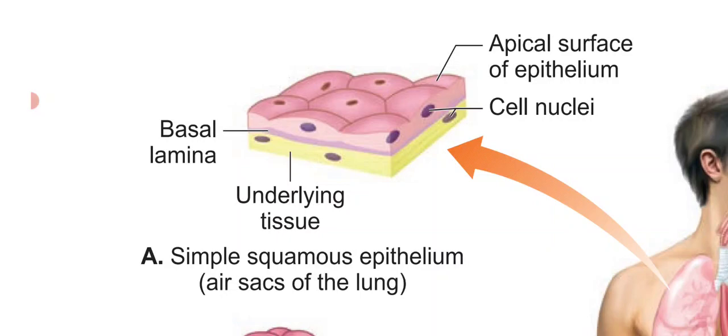Simple squamous epithelium is made up of a single thin layer of flattened cells with irregular boundaries. They are found in the kidney glomeruli, air sacs of lungs, lining of heart, blood vessels, and lymphatic vessels, and are mainly involved in forming a diffusion boundary and filtration in sites where protection is not important.